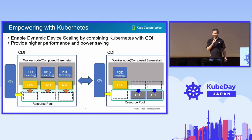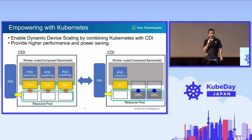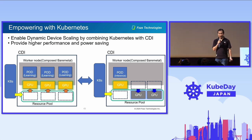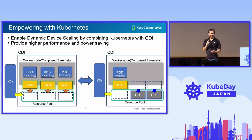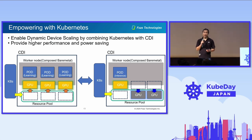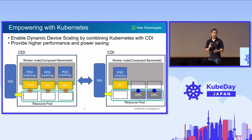To provide higher performance and power saving, we combined Kubernetes with CDI. When there is a heavy workload, Kubernetes can request CDI to attach GPUs to a worker node and provide higher performance. And when there is a light workload, Kubernetes can request CDI to detach GPUs and power them off to save power consumption. We call this mechanism dynamic device scaling, and we believe this is a key technology to realize a sustainable world.